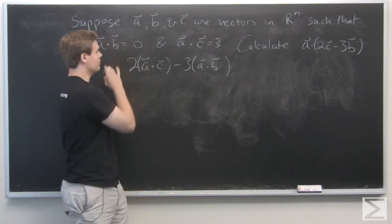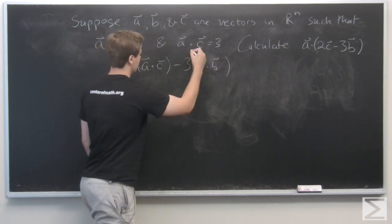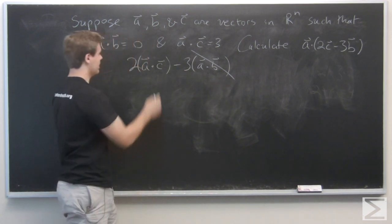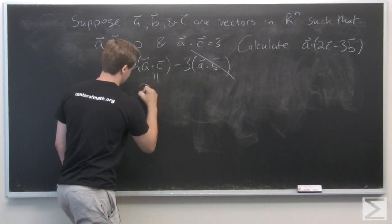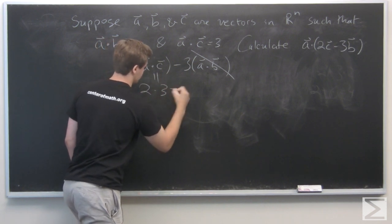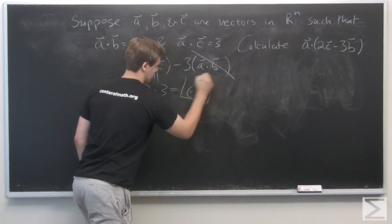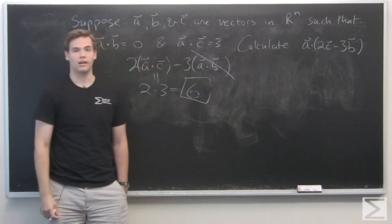From the given, we know that a dot b is zero and a dot c equals three. So this equals 2 times 3, which is six, and that's the answer.